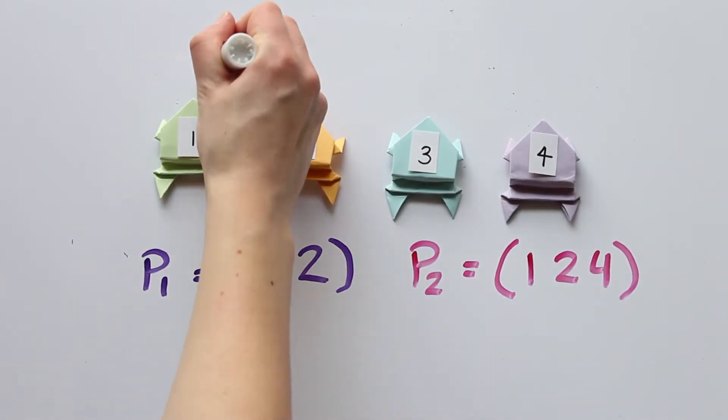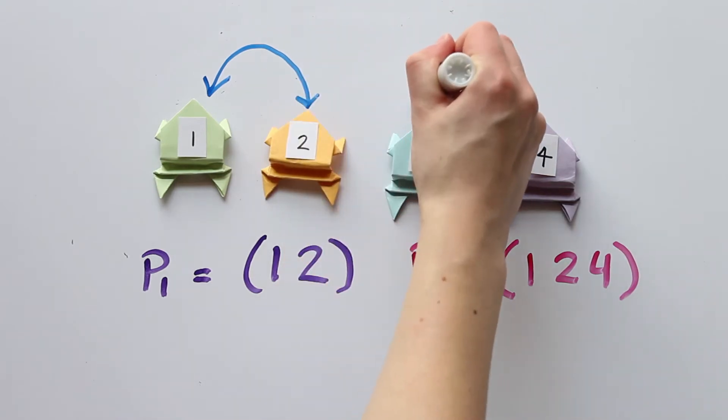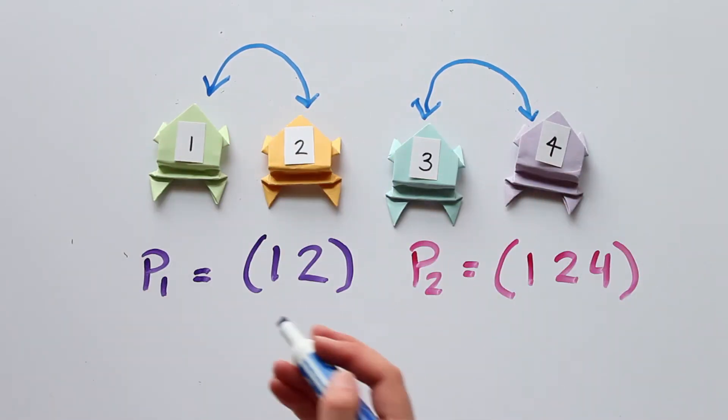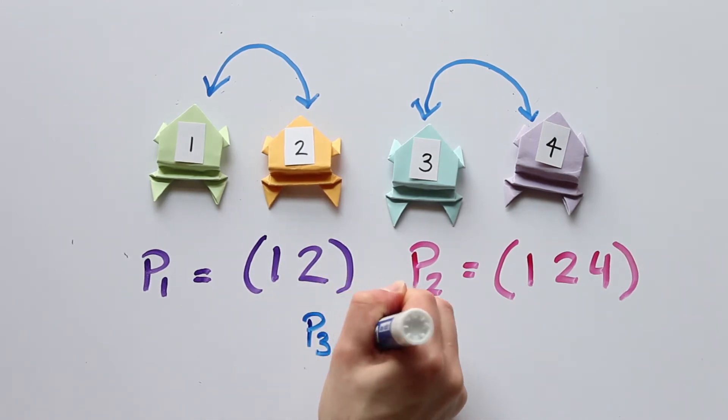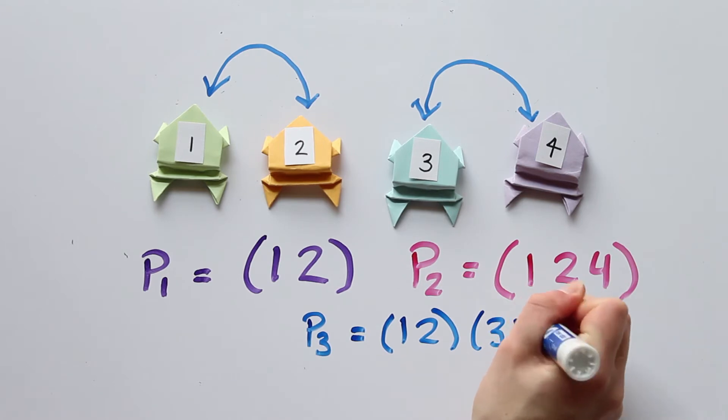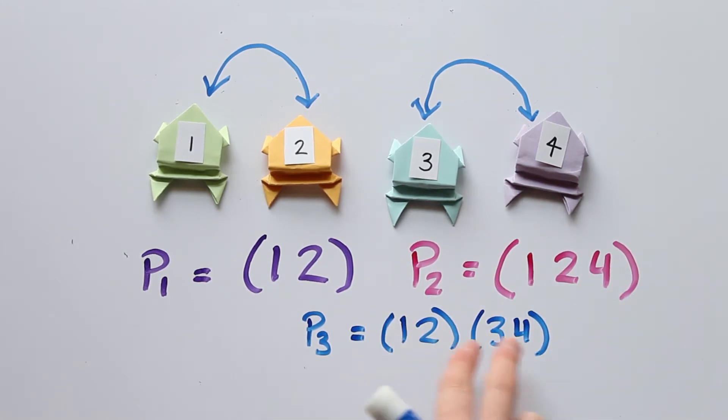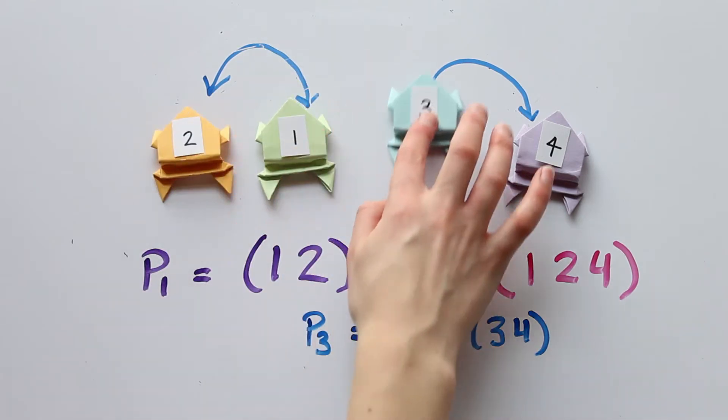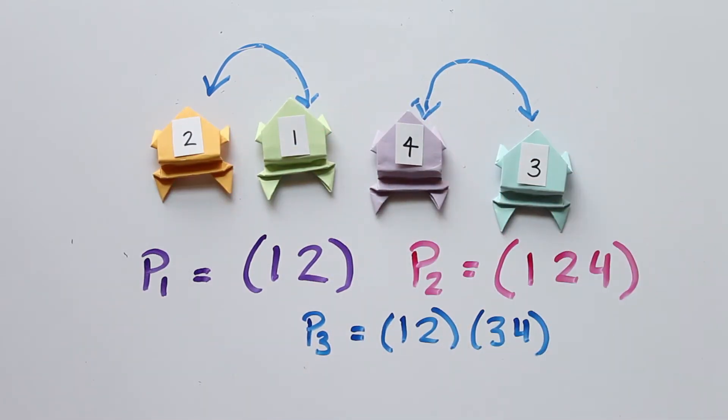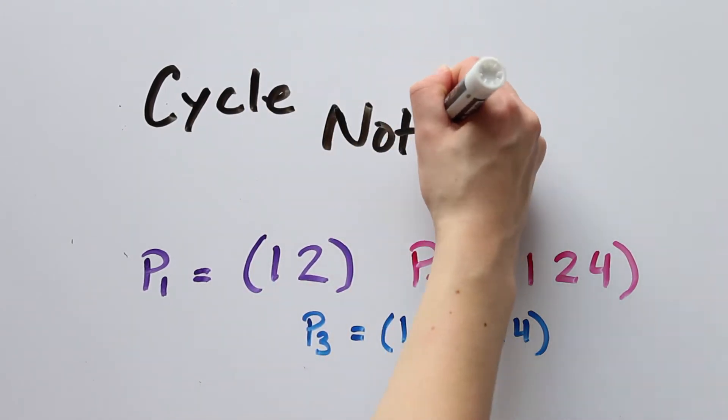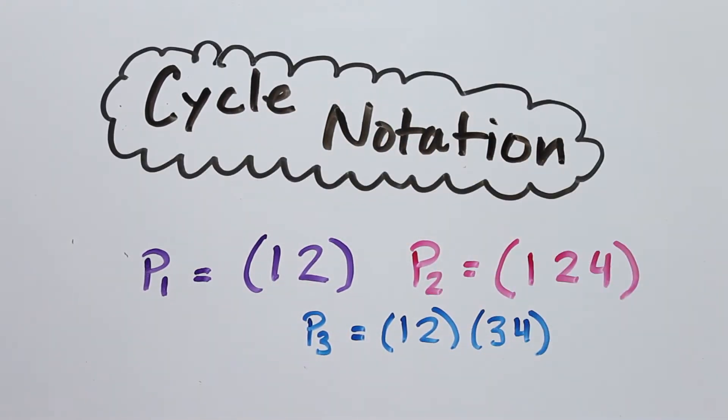Now consider if we switch frog 1 and frog 2 and then also switch frog 3 and frog 4. All frogs are involved, so we need to include information on all of them. We can write it as 1, 2, 3, 4. This means cycle 1 and 2 and cycle 3 and 4.